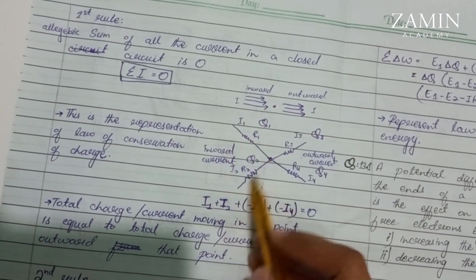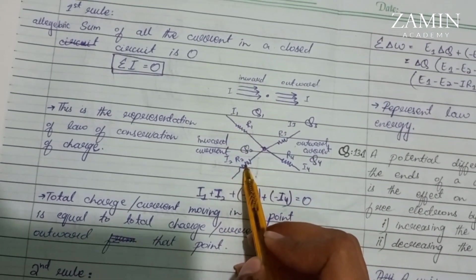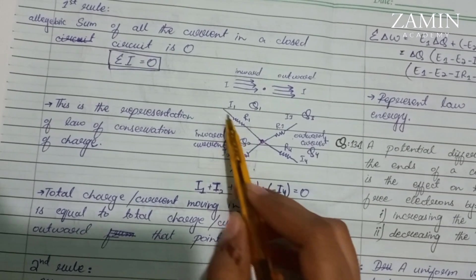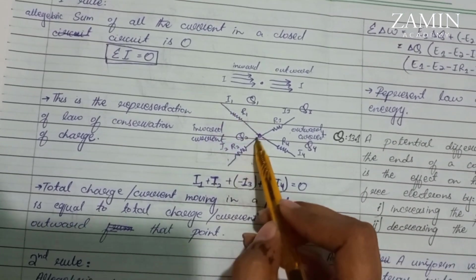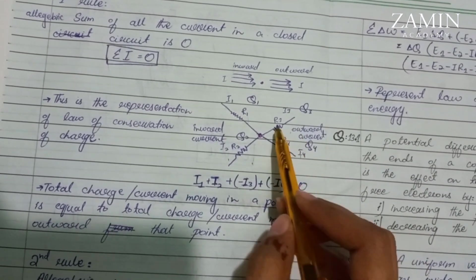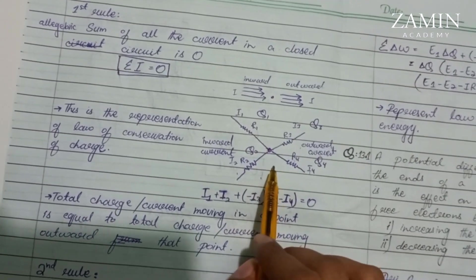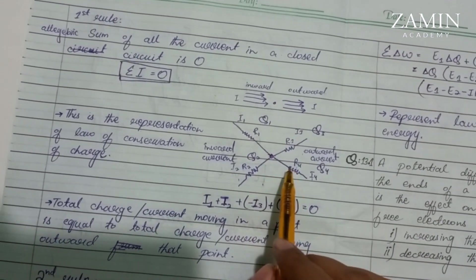If we represent this with a particular point in a circuit with resistance 1, resistance 2, resistance 3, and resistance 4, with currents i1, i2, i3, and i4, here the currents are inward and here the currents are outward.